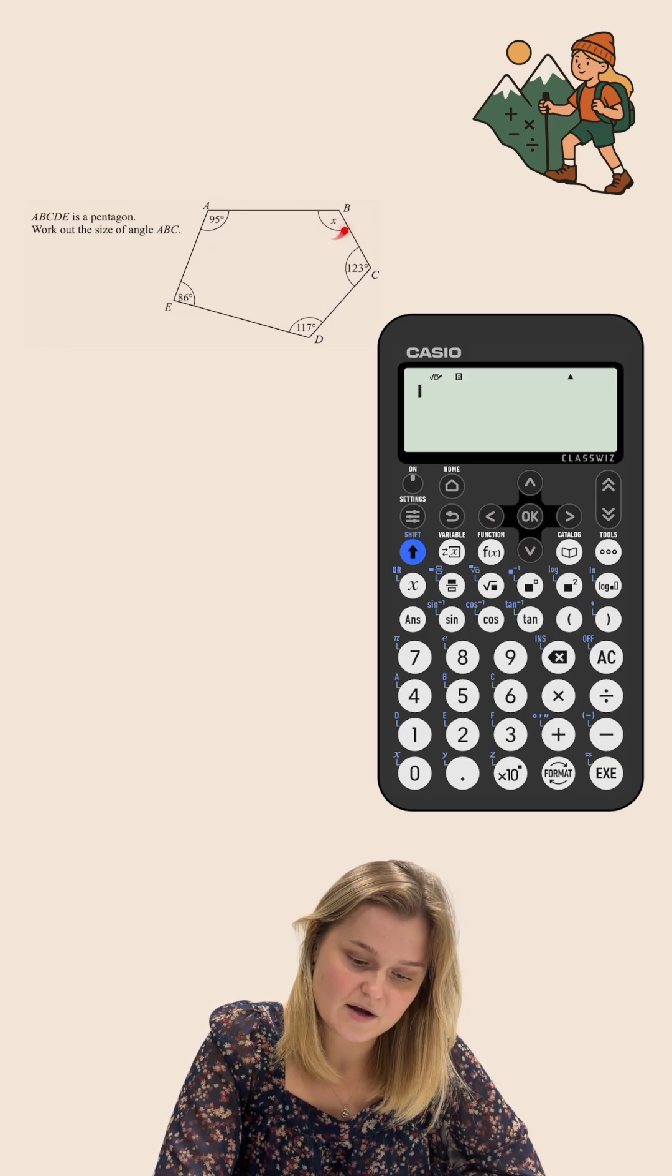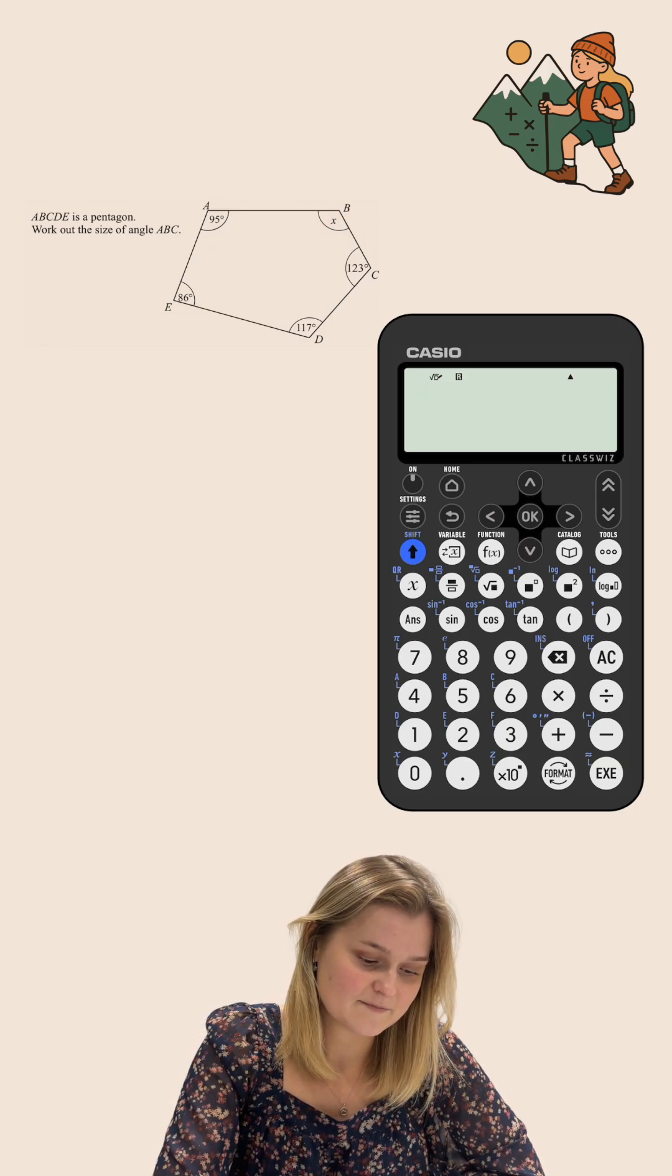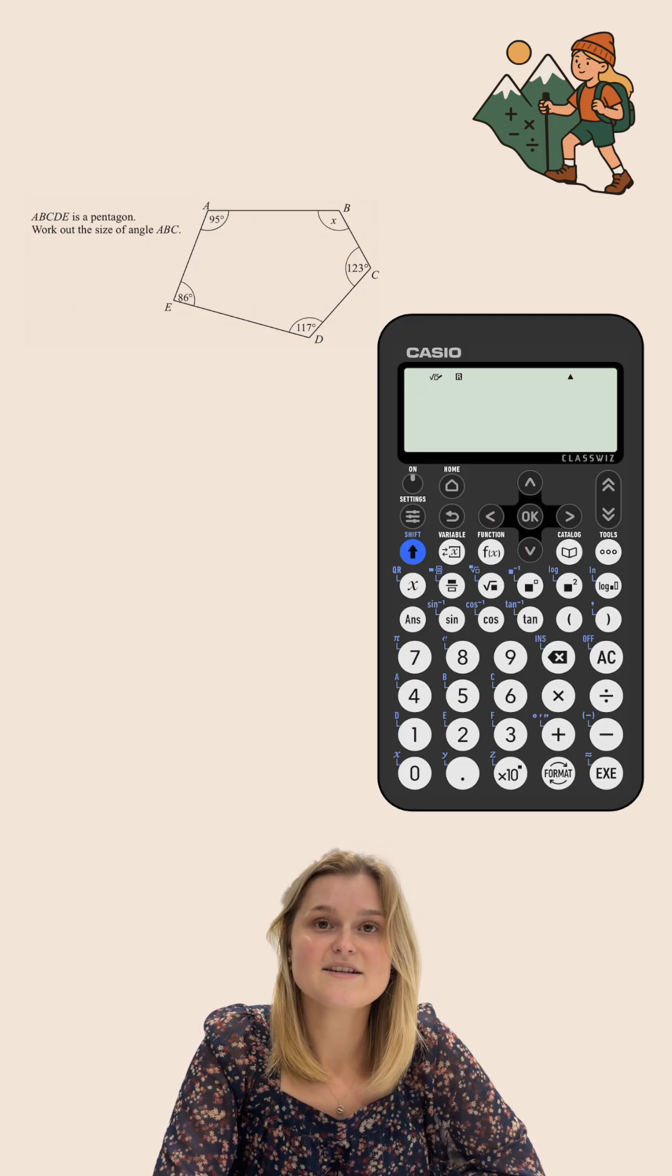Now, angle ABC is this one up here that's labelled as X. To do this, I'm going to need to use the formula to find the sum of interior angles in any polygon.